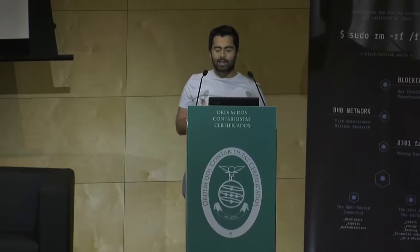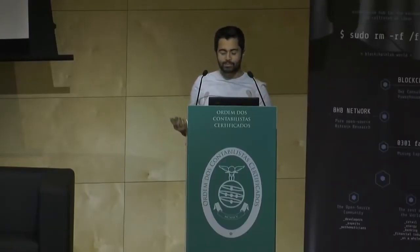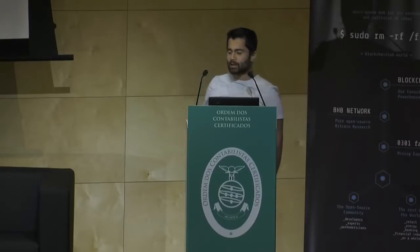To understand why Bitcoin's proof of work is a good use case here—and not just a basic Merkle tree—let me talk about what a basic model of transparency might look like. People have been suggesting using Merkle trees for verifiable logs since the 90s. This would consist of an append-only log that is a Merkle tree or hash chain, where a company being audited writes its actions to that log. The end user reads that log or gets a Merkle proof of inclusion.